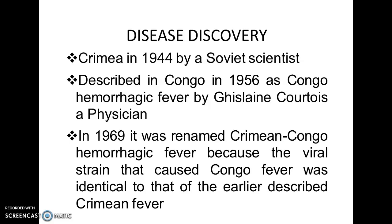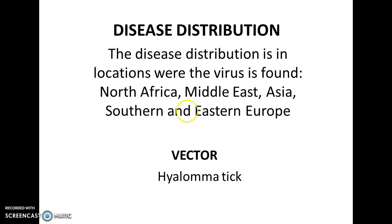Crimean Congo Hemorrhagic Fever was first discovered in 1944 by a Soviet scientist. It was first described in Congo in 1956 as Congo Hemorrhagic Fever by Ghislaine Cornet, a physician. In 1969, it was renamed Crimean Congo Hemorrhagic Fever because the viral strain that caused Congo fever was identical to that which caused Crimean fever in 1944.